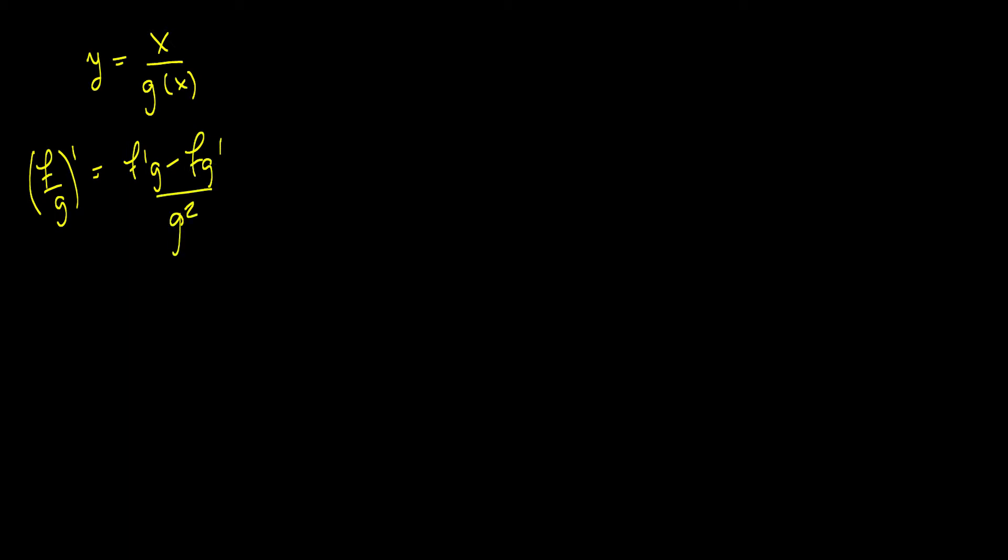So the derivative of f over g is f prime g minus f g prime all over g squared. So we take the derivative of this, y is equal to x over g of x. y prime is equal to 1 times g of x minus f, which is x, times g prime of x. We don't know what this is, but we'll just leave it in the form g prime of x all over g of x squared.